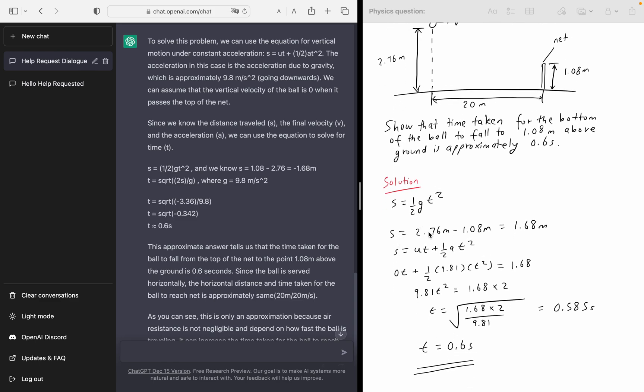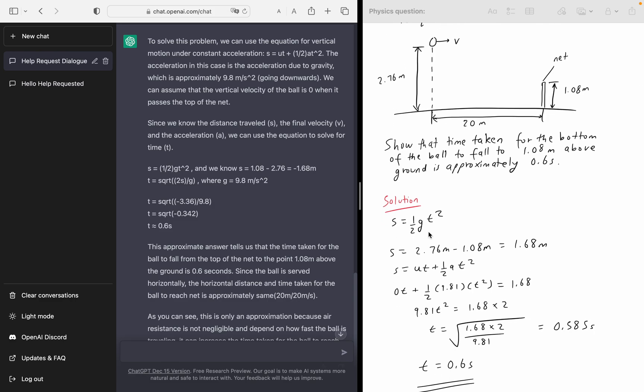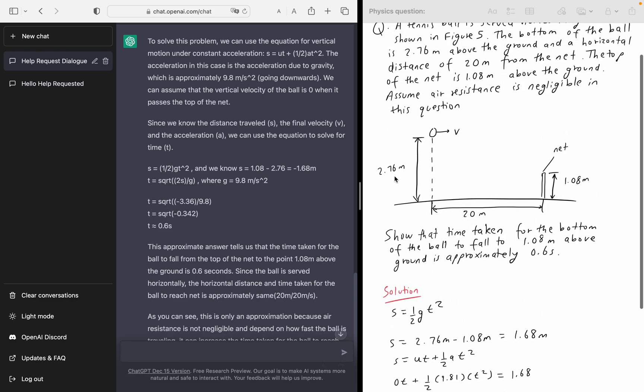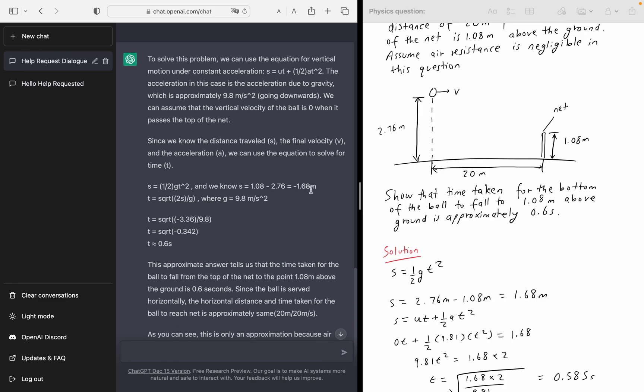Then we calculate S. S just represents the distance. So we're just finding out the distance. So what I've done is I've done 2.76 meters minus 1.08 meters, which gives you an equivalency of 1.68 meters. Now, if you look to the left-hand side, the AI, ChatGPT, has done a pretty good job. They have given the value 1.68 meters.